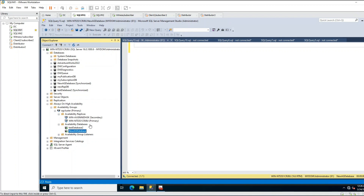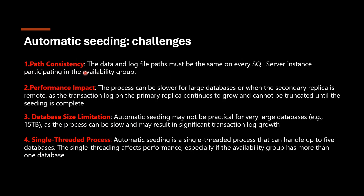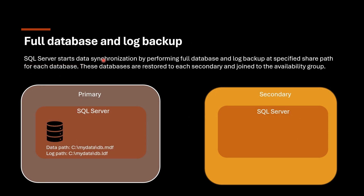This is called Automatic Seeding - very simple, easy, and fast to use. But there are some challenges. First, it requires the same file path in secondary - if you cannot create the same path in secondary, you should not use this option. Second, if you have a big database like one terabyte or 10 terabytes, do not use this method. It is for comparatively small databases like 400-500 GB. For very large databases it might take hours and impact your production servers.